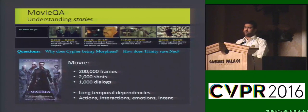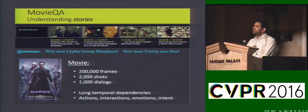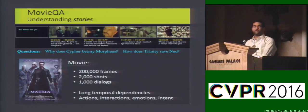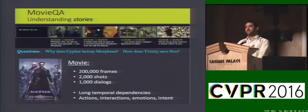For example, you probably all know how Cypher betrays Morpheus in the movie Matrix, or how Trinity saves Neo. But think of the level of visual, lingual, and common sense reasoning that is required to answer such questions.